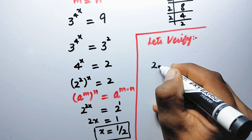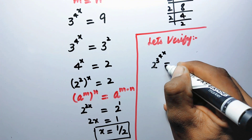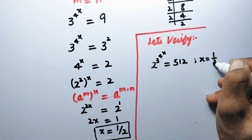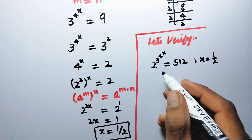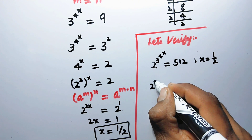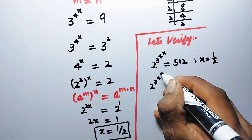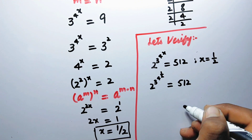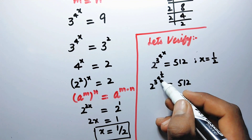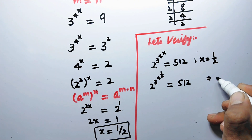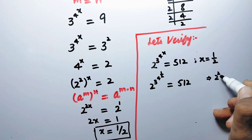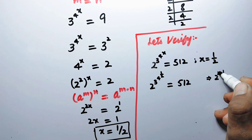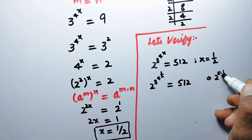We write the original equation: 2 to the power 3 to the power 4 to the power x equals 512, where x equals 1 over 2. Substituting, we get 2 to the power 3 to the power 4 to the power 1 over 2. We solve 4 to the power 1 over 2: since 4 is 2 squared, the powers multiply and the 2s cancel, giving 2 to the power 1, which equals 2.